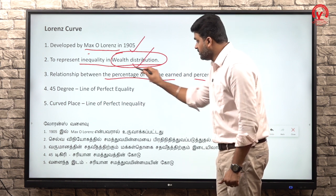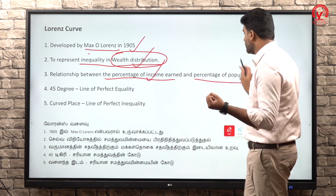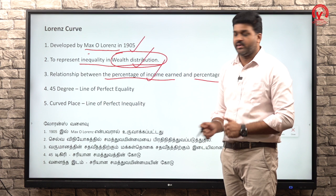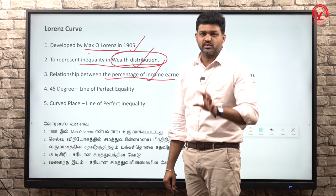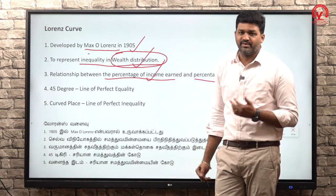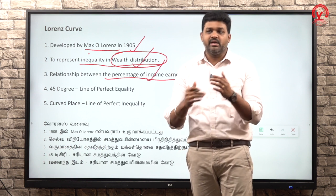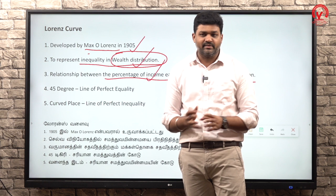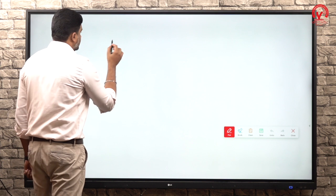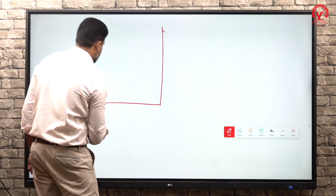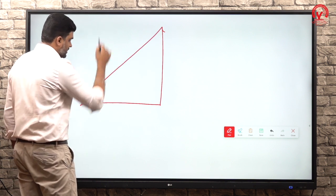So, the percentage of income earned - okay. The diagram in the Lorenz Curve is very important. You can follow the school books or textbooks for the diagram. So, on the graph, the x-axis and y-axis - let's get started. The y-axis and x-axis are set up as follows.